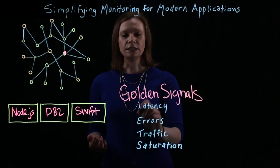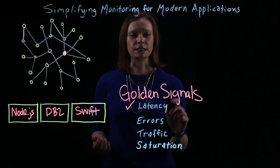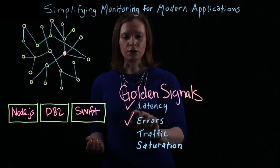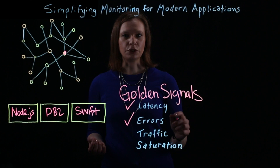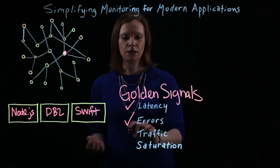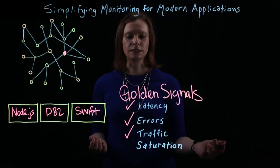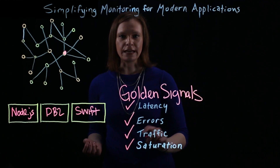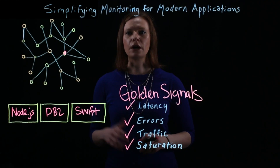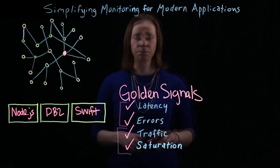The four golden signals are: latency, which is the time it takes to service a request; errors, which is a view of the request error rate; traffic, which is the demand placed on the system; and saturation, which is our utilization versus max capacity.